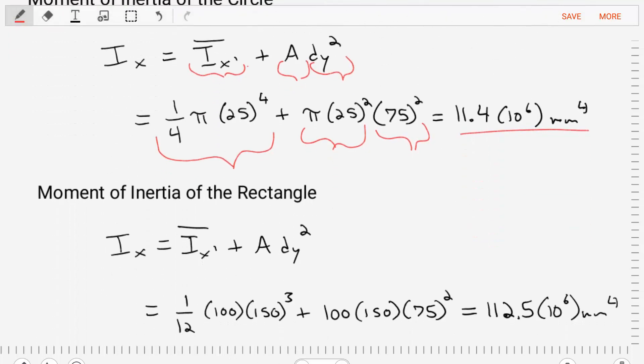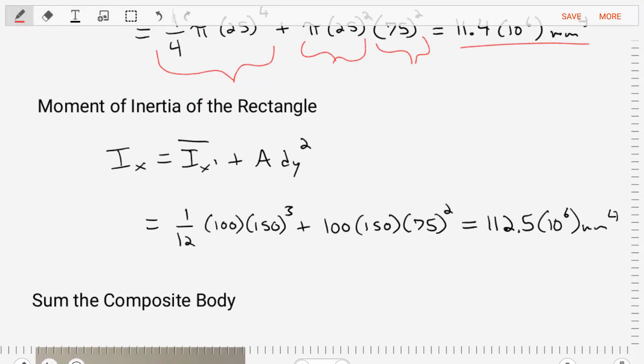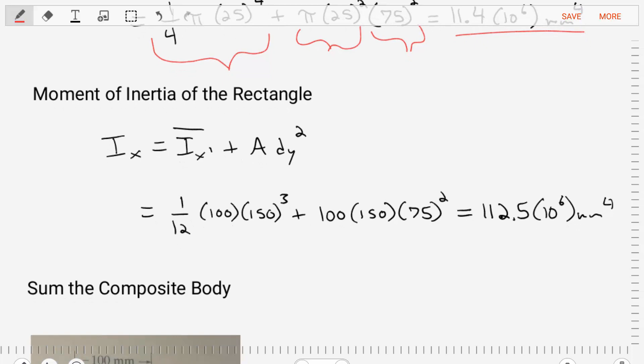All right, now let's find the moment of inertia of the rectangle. Again, we're going to apply the parallel axis theorem, where the moment of inertia of the x-axis is going to be the moment of inertia from the centroid plus the area times the distance between the axes. From the centroid, we've got our equation.